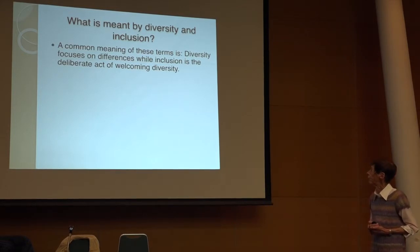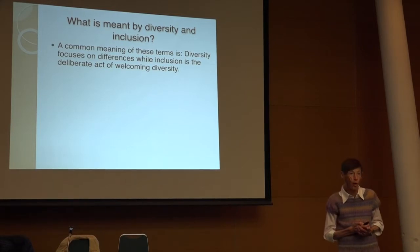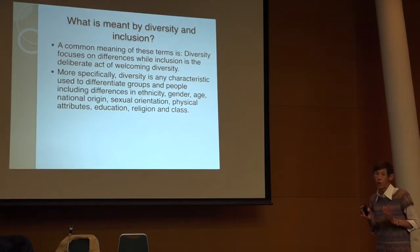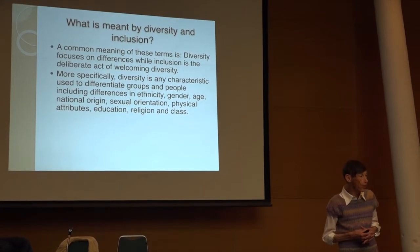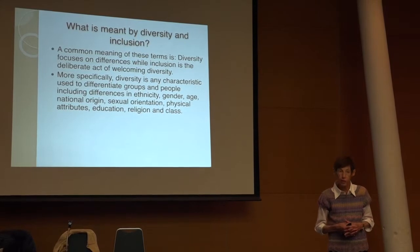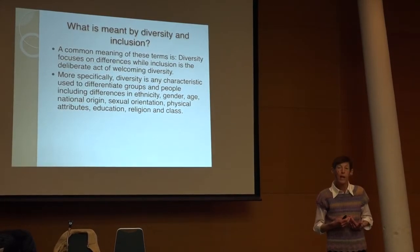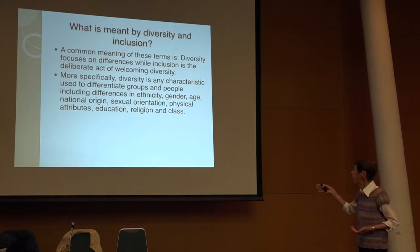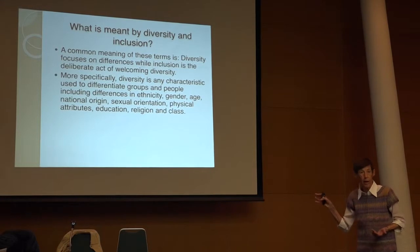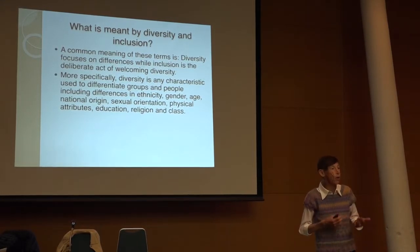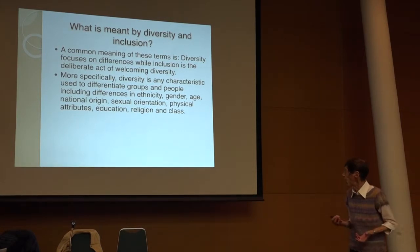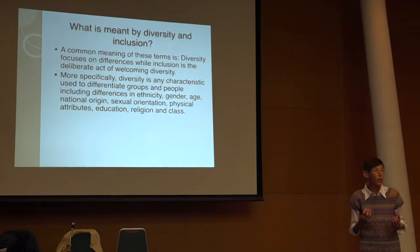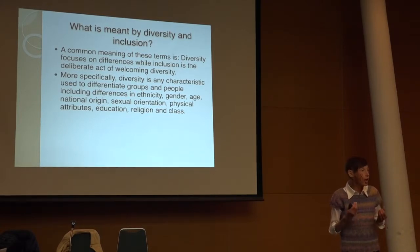So what do we mean by diversity and inclusion? Diversity focuses on differences, while inclusion is a deliberate act of welcoming diversity. Diversity can be any characteristic used to differentiate a group of people — ethnicity, but also gender, age, national origin, sexual orientation, physical attributes, disability, colorblindness, education, and religion. Yet very few textbooks will touch anything but ethnic diversity. Why? Because it's a safe topic, particularly when framed globally rather than nationally.